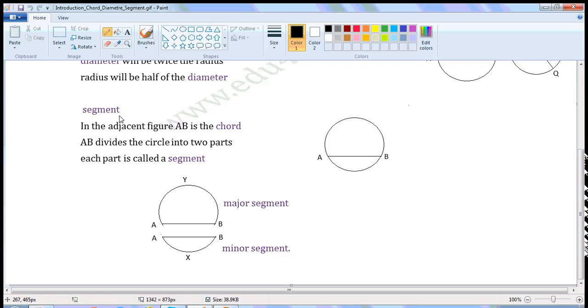The next one, segment. In the adjacent figure, AB is a chord. AB divides the circle into two parts. Each part is called a segment.